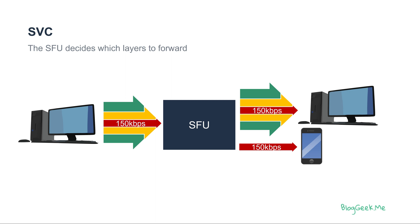When we look at SVC, Scalable Video Coding, this is like Simulcast on steroids. The sender now is not going to send multiple streams, but rather a single media stream with multiple layers in it. And then the SFU can decide which layers to take, peeling them like an onion, when it is sending that data towards the other participants.